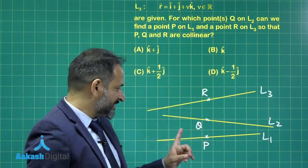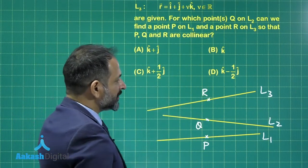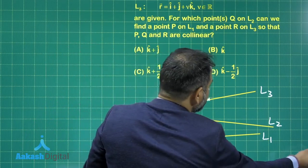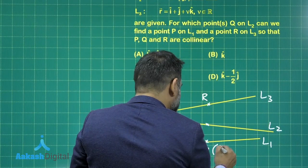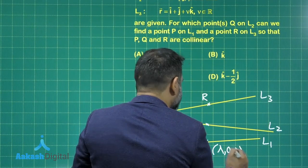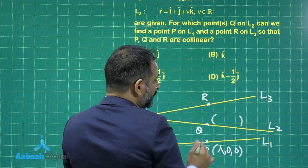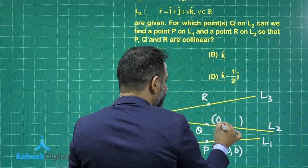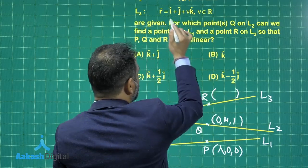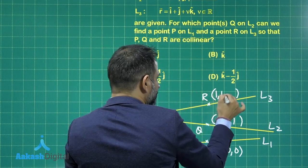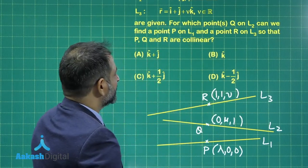This figure gives us three lines: P is lying on the first line, Q is lying on the second, and R is lying on the third line. Let us assume the points. The first line is λî, so this point can be assumed as (λ, 0, 0). The second is on k̂ + μĵ, so we have (0, μ, 1). The third point R is on this line, so this can be assumed as (1, 1, ν).